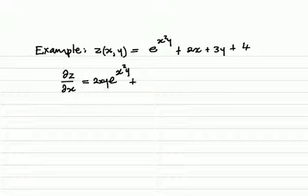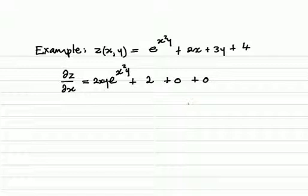Then plus 2 as the derivative of 2x, plus 0 as the derivative of 3y because y is a constant in this case, and plus 0 for the constant 4. Simplifying, we get that as 2xy · e to the power of x squared y, plus 2.